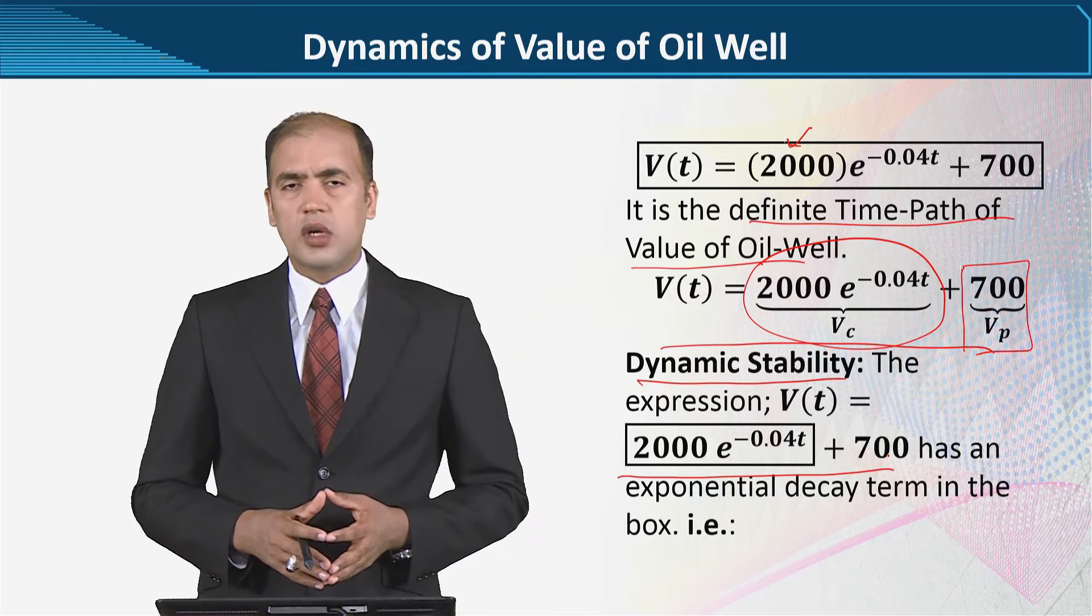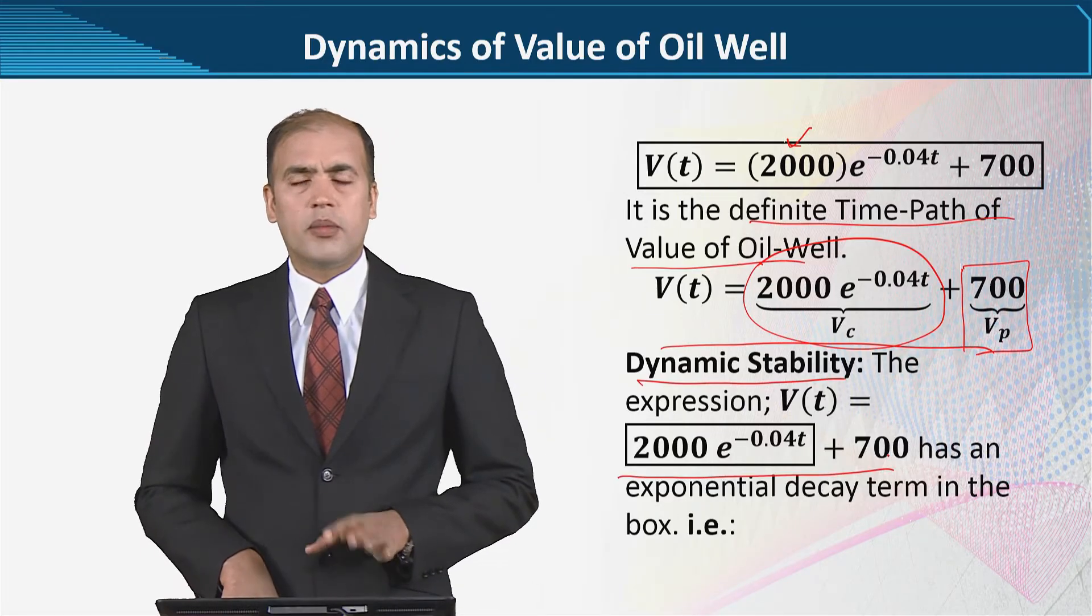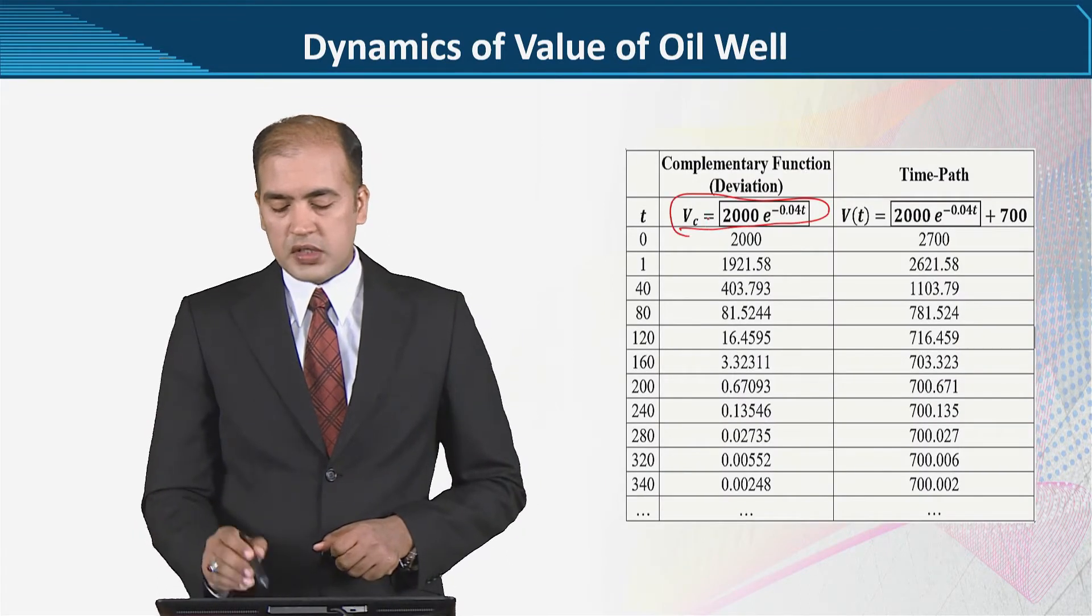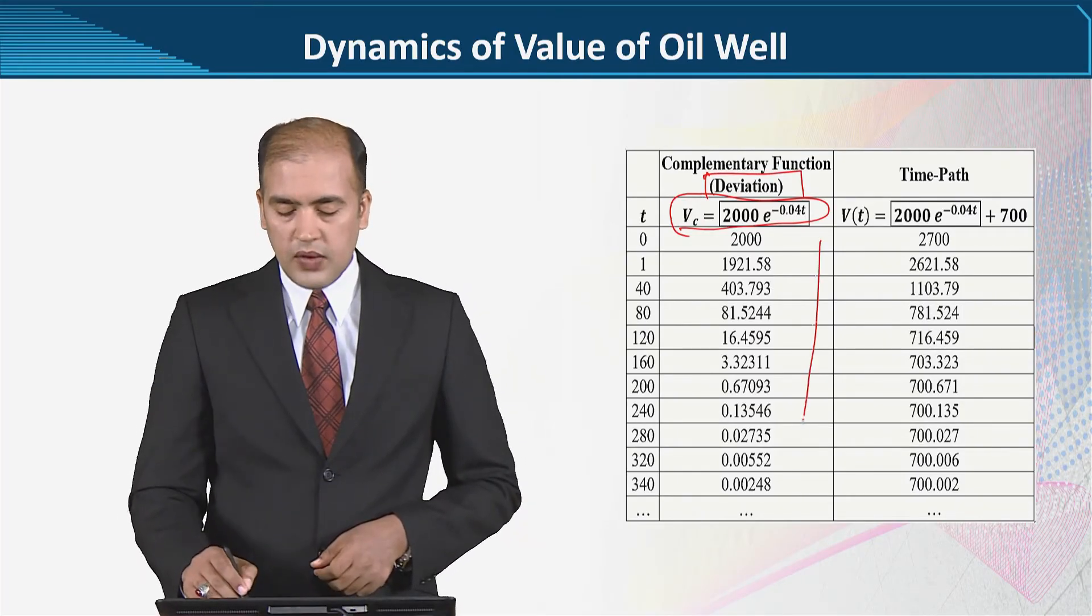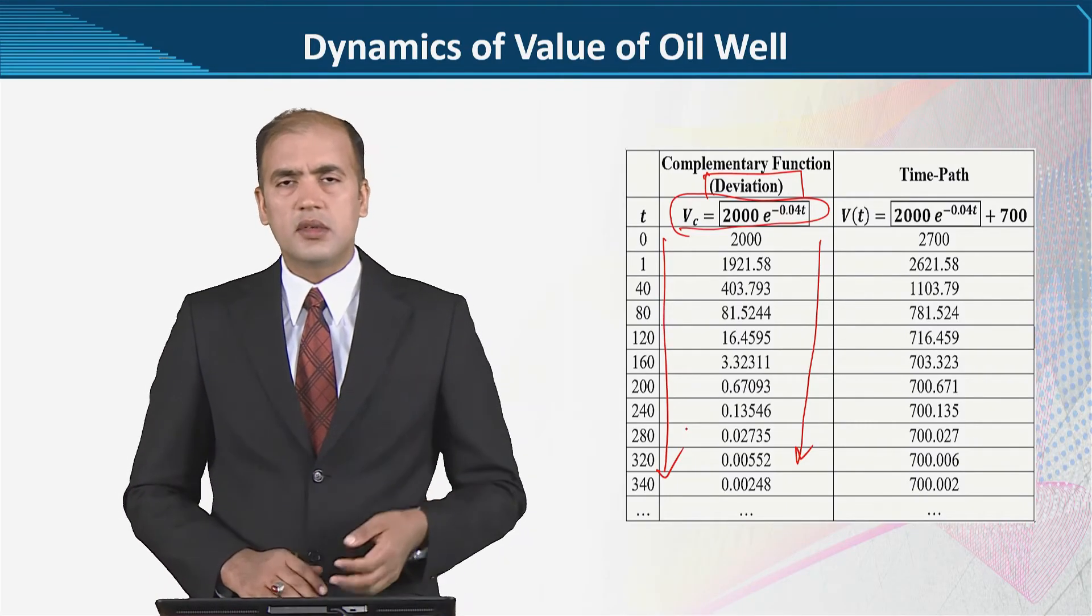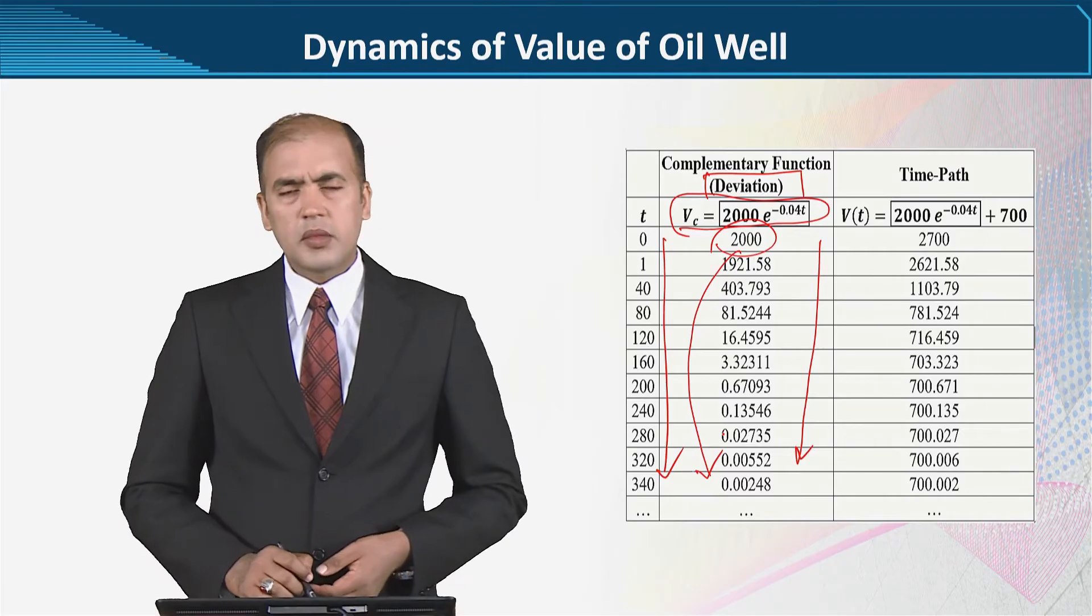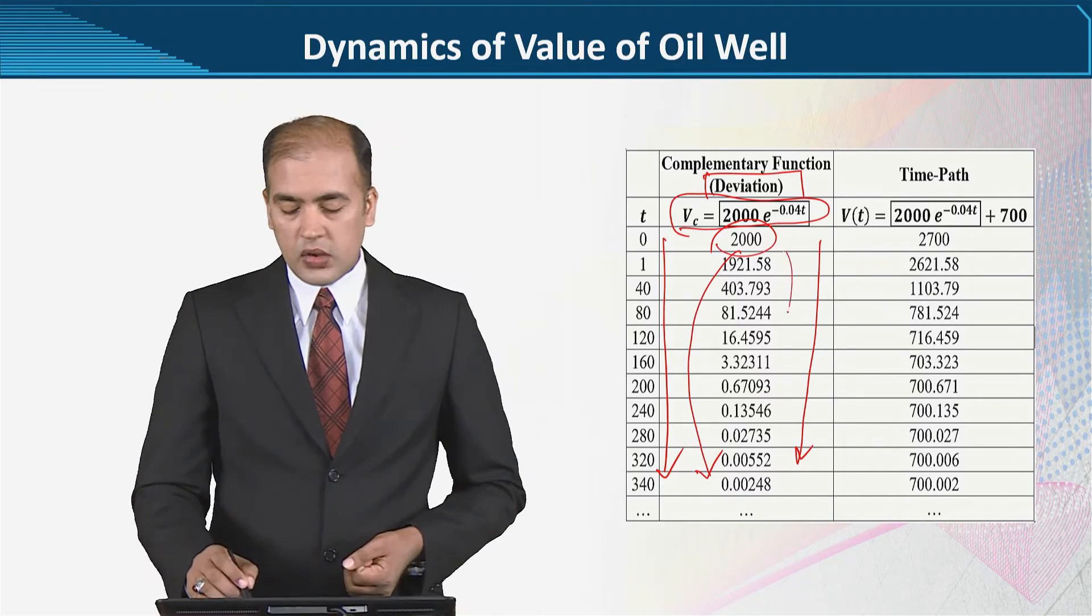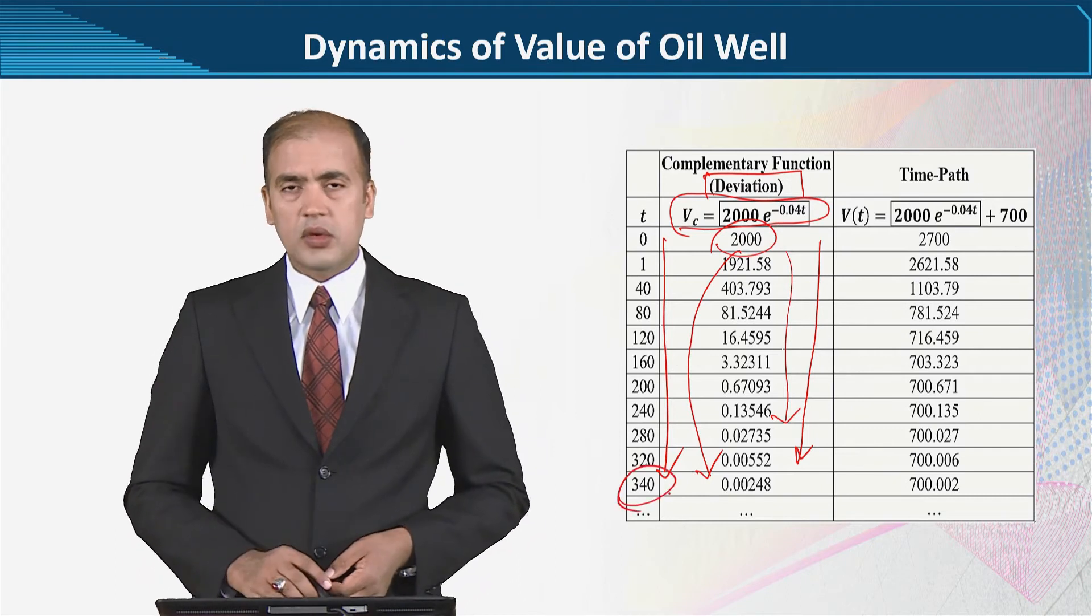In order to find out if the time path is dynamically stable or not, we will have just the complementary function को यहां पर borrow किया जो actually deviation को show करता है. When we evaluated it on various values, जहां पर हमने अपनी सहुलत के लिए इन values को छोड़ा, otherwise these are continuous values, we found that after quite a bit of calculations यह तकरीबन 0 तक पहुँच जाती है. The decline starts immediately, but definitely it's a slow decline, that is why हमने एक higher value तक assessment की.